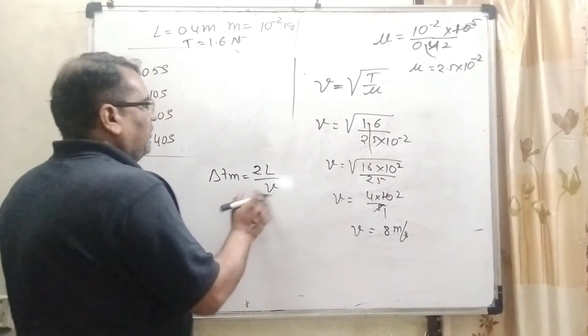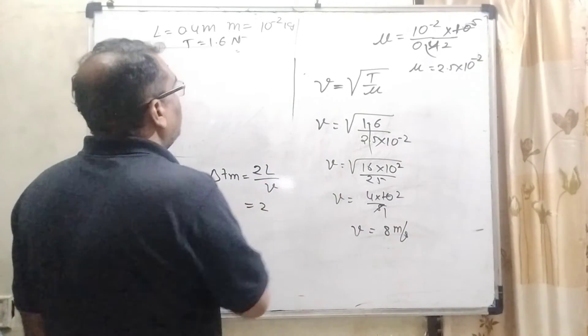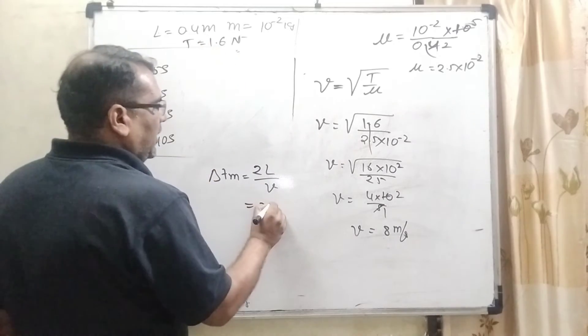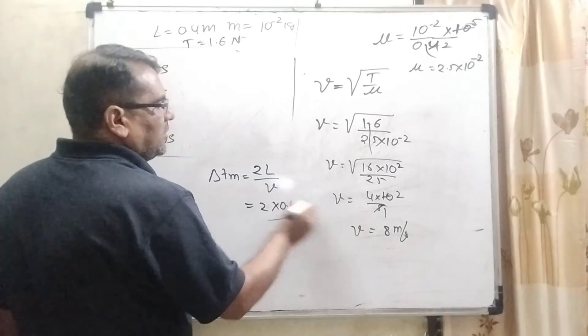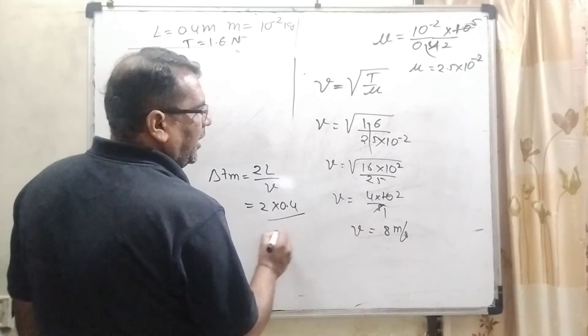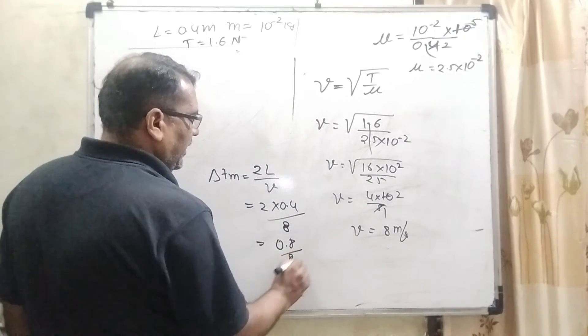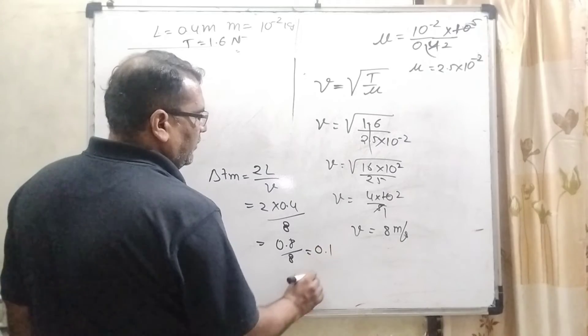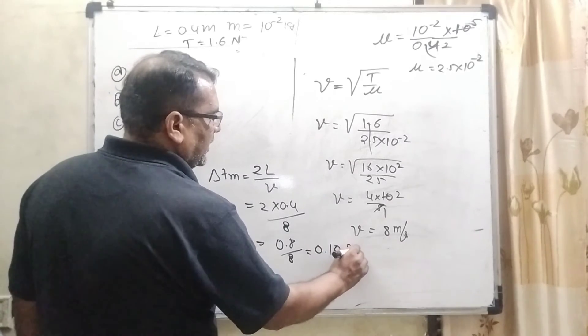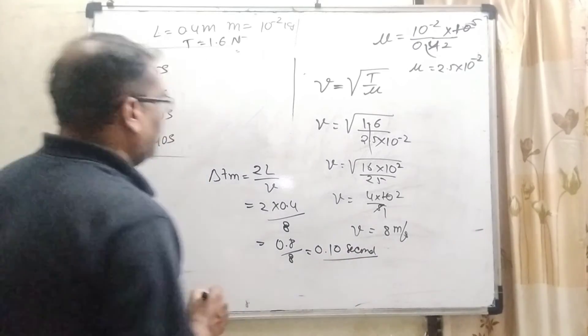So here 2L upon V, what is the length given? 2L, that is 0.4 times 2 equals 0.8. And what is the velocity we have already found out? 8 meter per second. So, 0.8 divided by 8, we get 0.10 second.